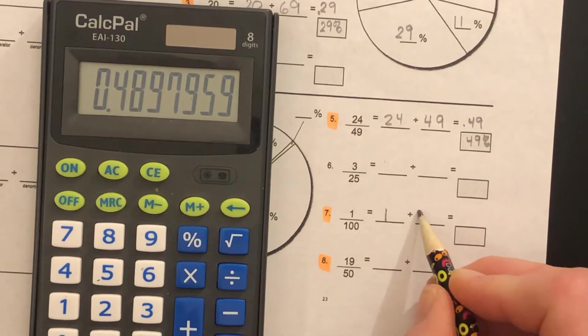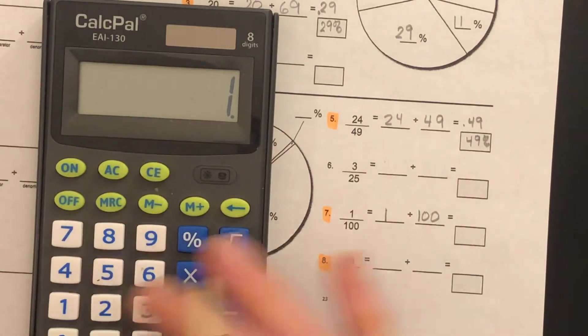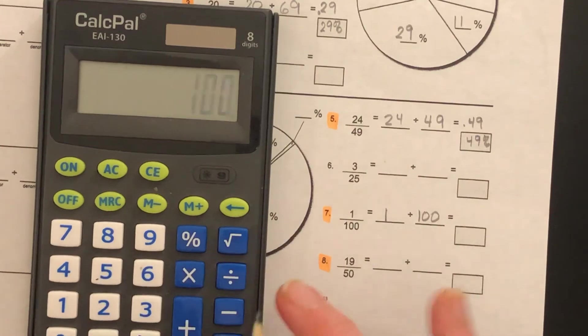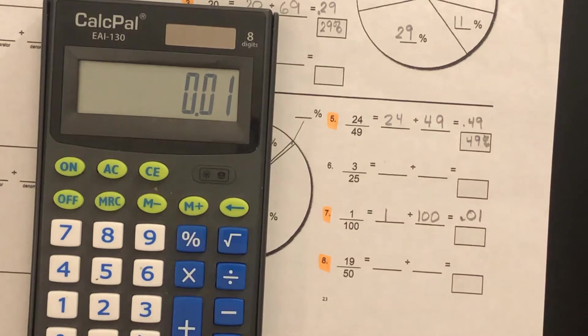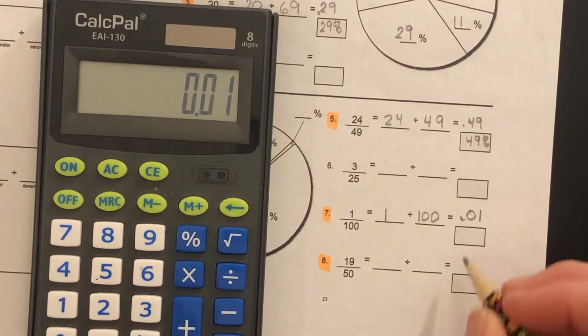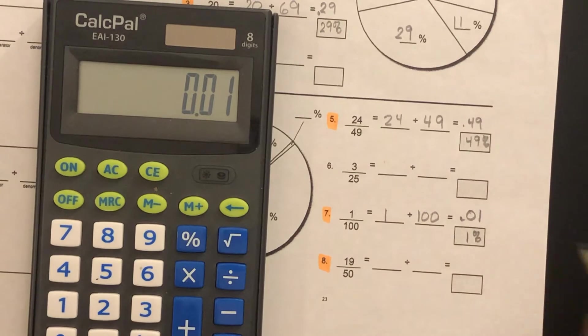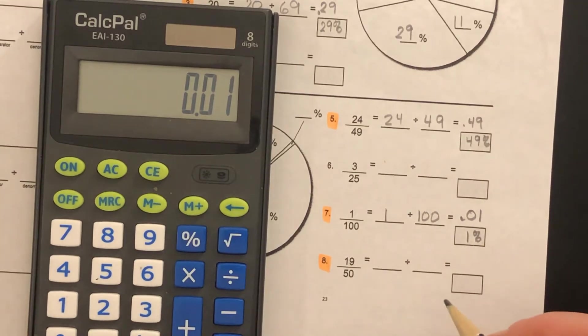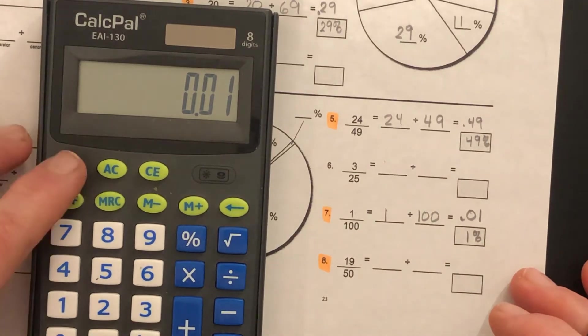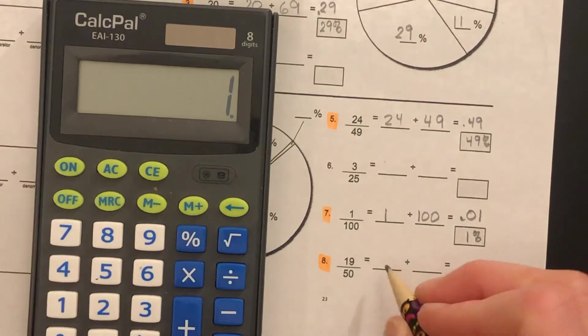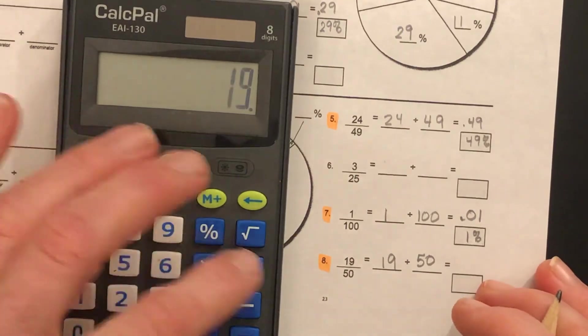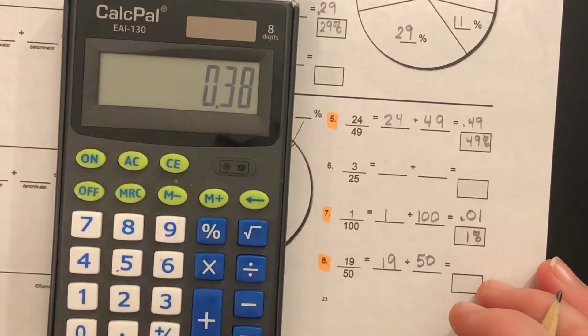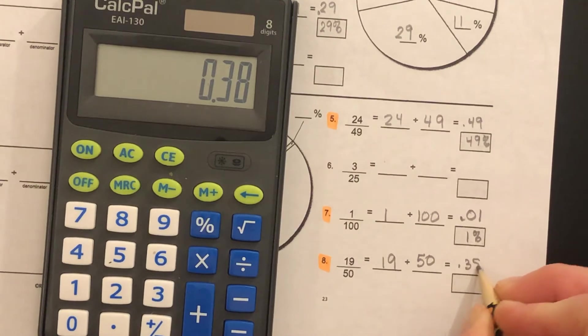1 divided by 100. That would be 0.01, one hundredth in decimal form, one percent. Finally, 19/50: 19 divided by 50. 0.38, thirty-eight hundredths, thirty-eight percent.